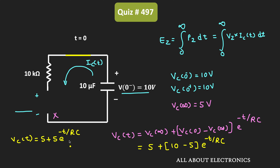As you can see, when T equals 0, the voltage across the capacitor is equal to 10V, and at time T equal to infinity, the voltage is equal to 5V. So this is the equation of the voltage across the capacitor. From this, if we want to find the capacitor current, we can easily find that.